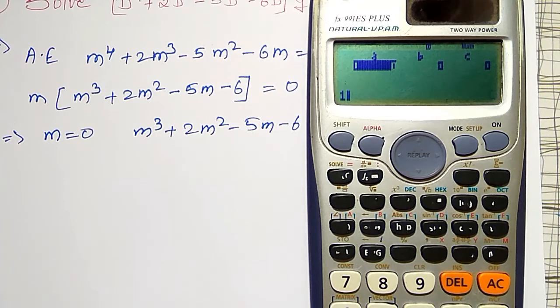a is 1, b is 2, c is minus 5, and d is minus 6. And press equal to, then we will get the roots.